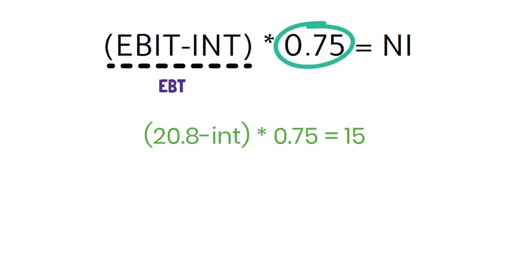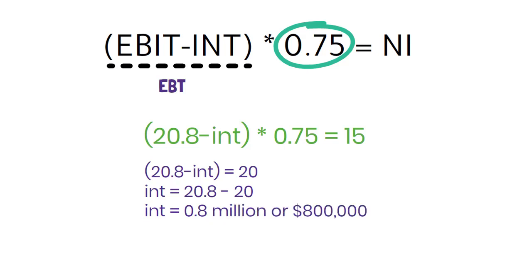For those who want to learn detailed calculation, this is what you can do. Divide both sides of the equation by 0.75 and make it simple. Now subtract 20 from 20.8 to get the interest expense which is 0.8 million or $800,000.